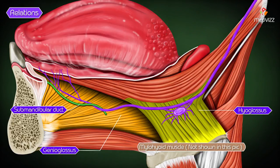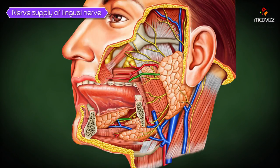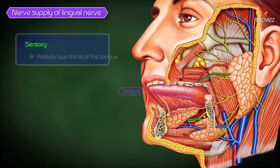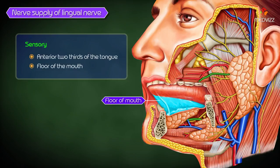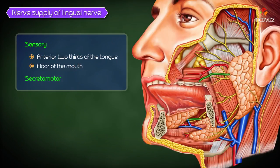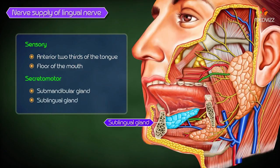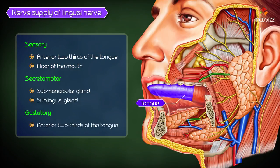Regarding nerve supply, the lingual nerve is sensory to the anterior two-thirds of the tongue and to the floor of the mouth. However, the fibers of the chorda tympani — which is a branch of the facial nerve — are also distributed through the lingual nerve. These fibers are secretomotor to the submandibular and sublingual salivary glands, and gustatory to the anterior two-thirds of the tongue.